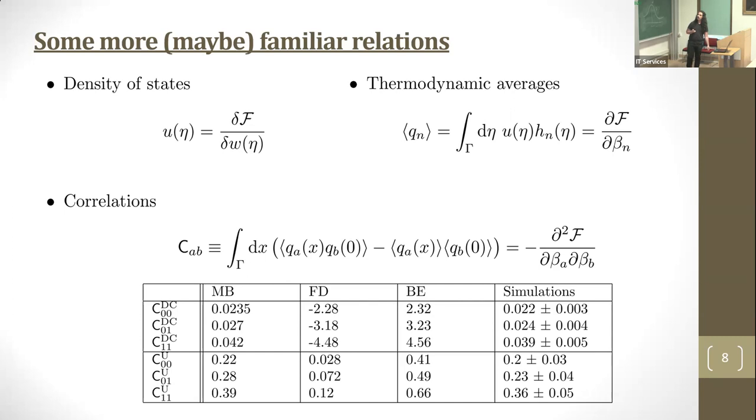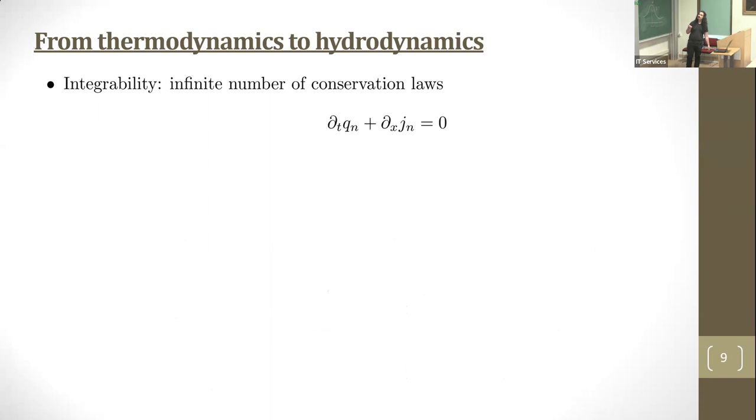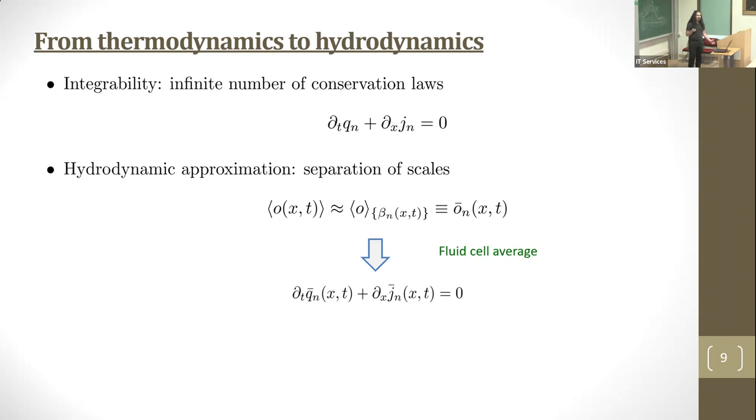Very quickly, this was thermodynamics. Let me tell you about hydrodynamics. We start with this infinite number of conservation laws. Instead of taking a homogeneous gas, we slowly modulate. As Benjamin argued earlier, we perform the hydrodynamic approximation by assuming separation of scales. We look at fluid cells small compared to the variation of macroscopic quantities, but big enough to assume local thermal equilibrium. The average at x,t can be taken as the average within the local Gibbs ensemble.